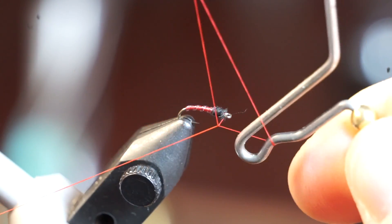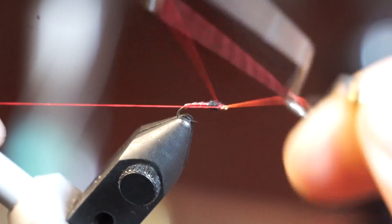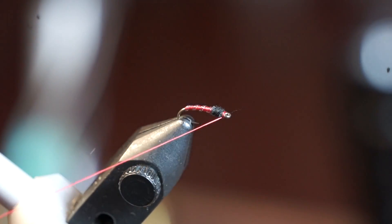Now you can whip finish your fly. This fly is technically finished. However, I like adding a bit of Bone Dry UV curing resin to the whip finish.